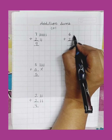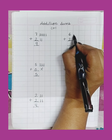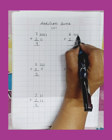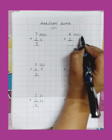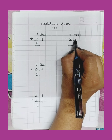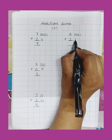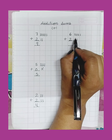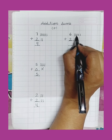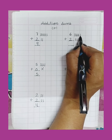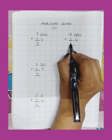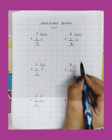Number 6. Draw 6 lines: 1, 2, 3, 4, 5, 6. Number 2. Draw 2 more lines: 1, 2. Count the lines: 1, 2, 3, 4, 5, 6, 7, 8. Write here 8.